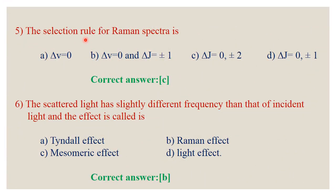Question number 5: The selection rule for Raman spectra. For rotational Raman spectra, delta J = 0 or ±2. Delta J = 0 gives the Rayleigh line (no shift), and the frequency difference between incident and scattered light is due to the Raman effect.